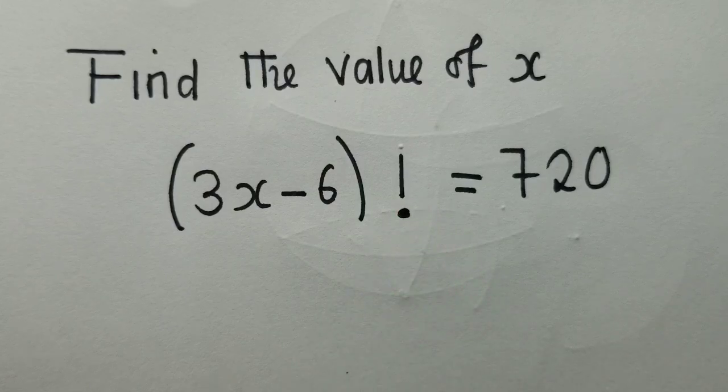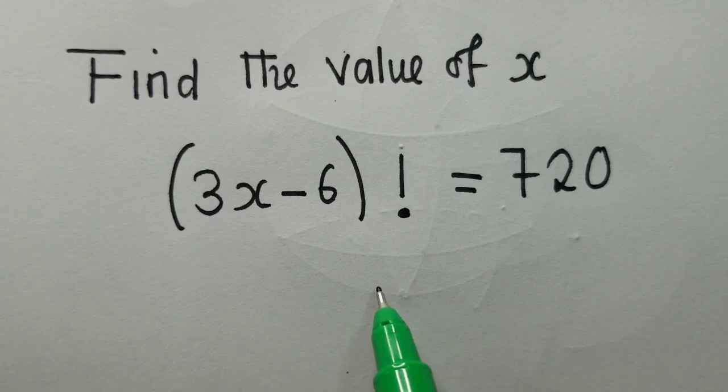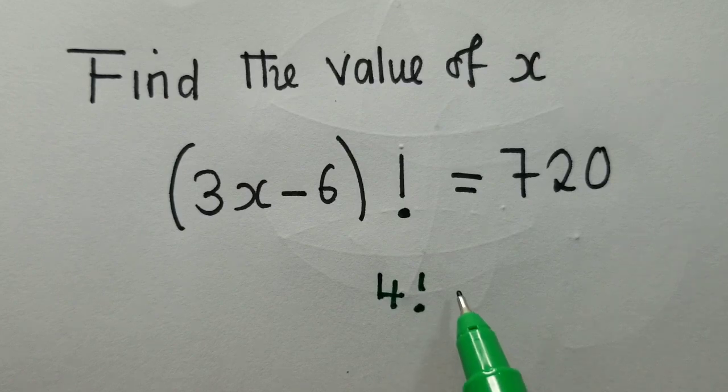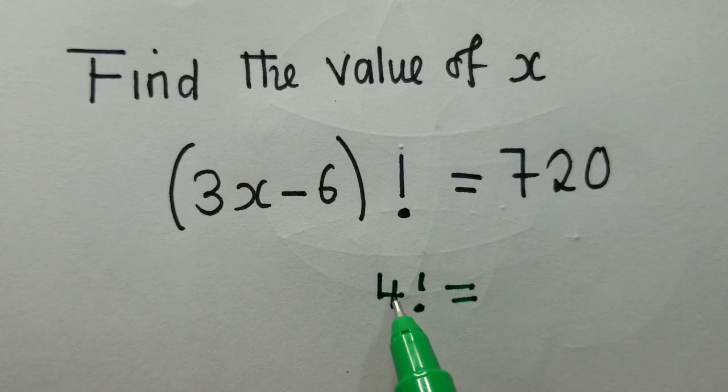This symbol means factorial. So when we say factorial, let's say we say 4 factorial, it means you get this 4, you multiply it by 3 by 2 by 1.